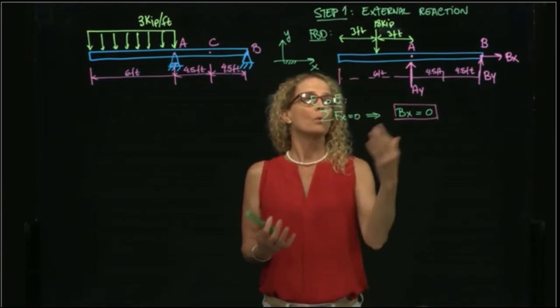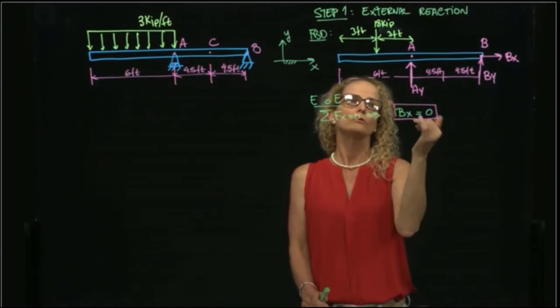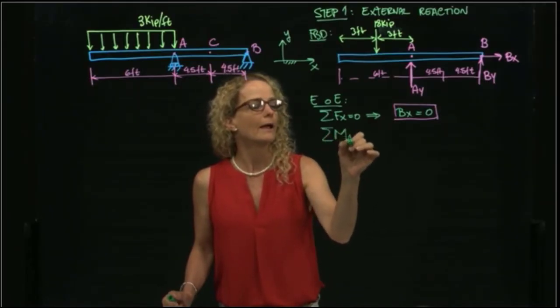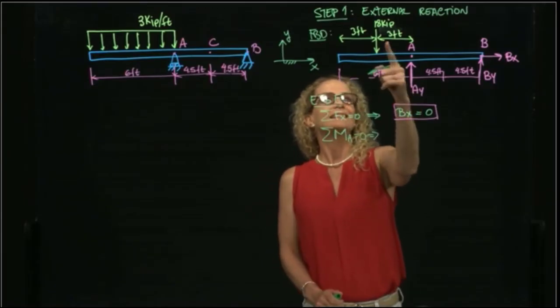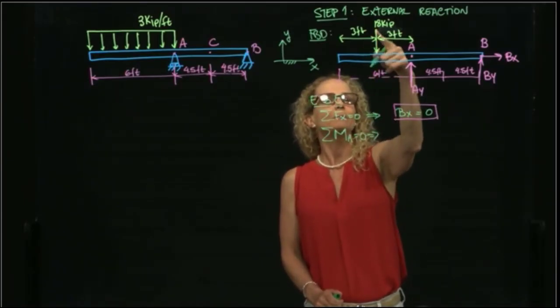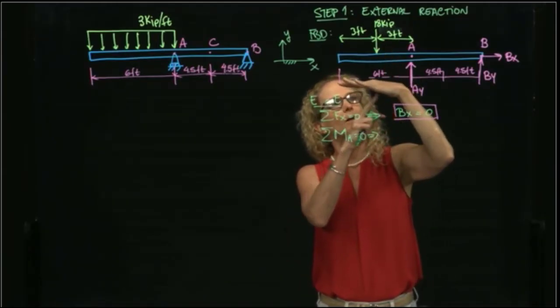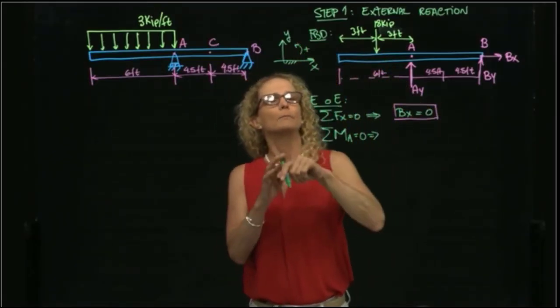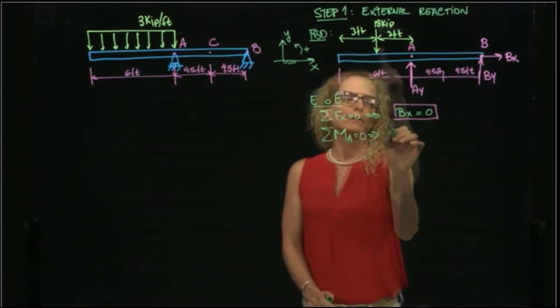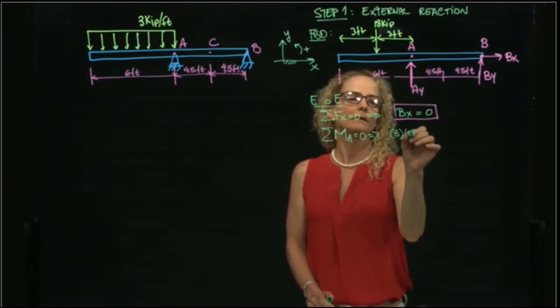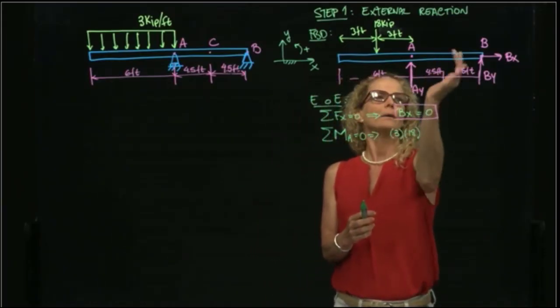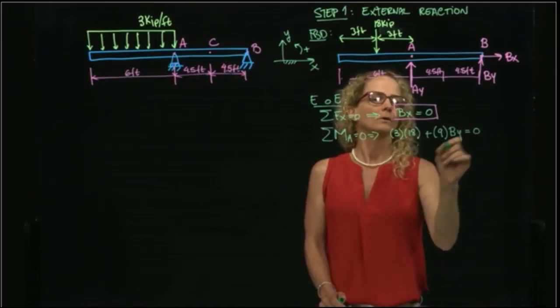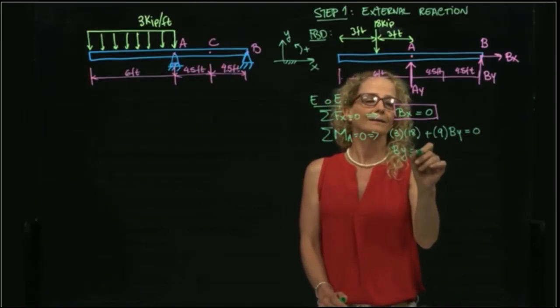Then I add forces in Y. When I add forces in Y, I have two unknowns. So it may be better to calculate moments with respect to one point. So I will calculate moments with respect to point A equals to 0. What do I have? I have 3 feet and 18 kip. And if I place my hand at A and I put my palm toward the distance, I curl my fingers to 18, I get a positive moment of 3 times 18. And then I get also a positive moment of 9 times BY. Therefore, BY is equal to negative 6 kip.